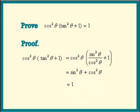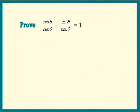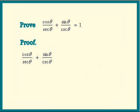Ready for the next example? In this one, we're asked to show that cosine theta over secant theta plus sine theta over cosecant theta equals 1. Same thing — we'll just take the left side, simplify it as much as we can, and hope that it comes out equal to 1. Here we go: cosine theta over secant theta plus sine theta over cosecant theta equals...